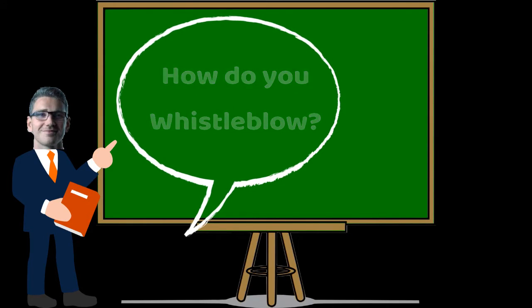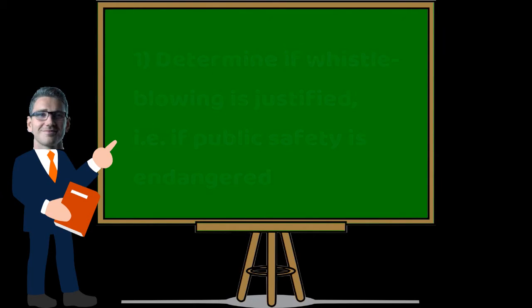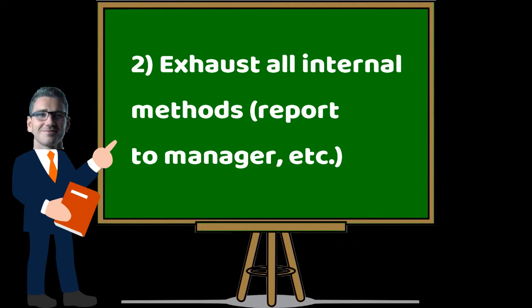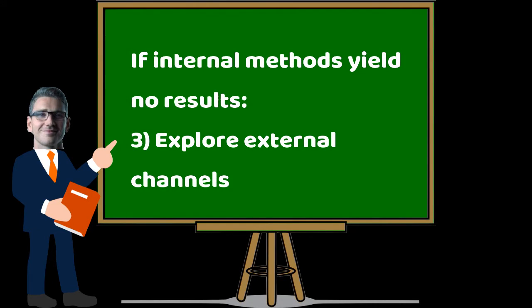Here are some tips on how to whistleblow. First, determine if whistleblowing is justified in your situation. Second, approach a colleague and explore internal methods for disclosing the issue. Lastly, if there are no results from internal channels, explore external options such as the media.